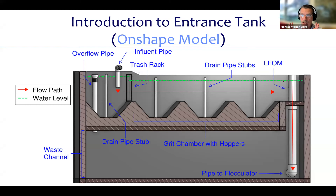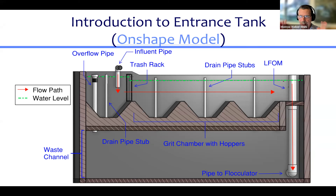The other thing in the water that would be a nuisance in the rest of the plant is grit - think sand and slightly smaller particles that are heavy enough to settle out quickly. If we don't capture them here, they'll settle in the next process, the flocculator. It just accumulates in the bottom and operators have to pull the baffles out to clean it, so we prefer to take the grit out in the entrance tank.